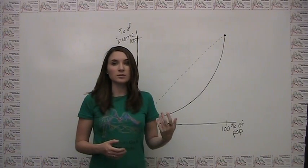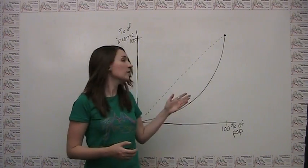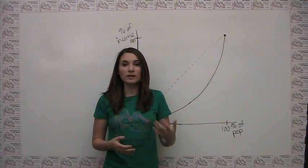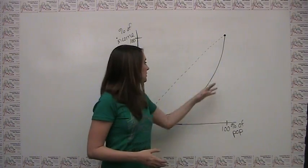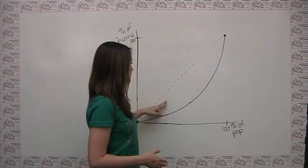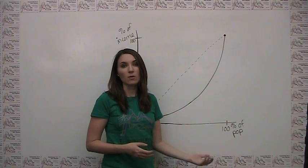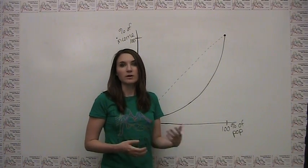Therefore, we can conclude that Lorenz curves that are bowed further away from this diagonal correspond to economies with more income inequality, and Lorenz curves that are closer to this diagonal correspond to economies with higher degrees of equality, or lower degrees of inequality.